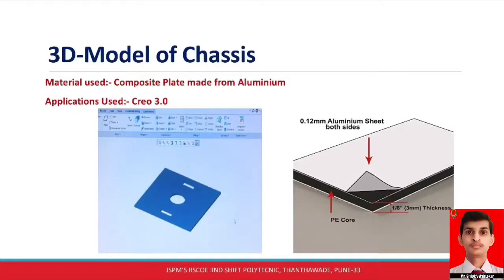In the next slide we can see a 3D model of the chassis, which was created in Creo Parametric 3.2. The figure opposite the 3D model image shows the composite sheet being used as the chassis in our project. A composite sheet is made up from a composition of two or more elements. In this case, the composition is 0.12 mm of aluminium on both sides with recycled polythene as the core material. This composite sheet is durable, able to sustain a large amount of load, with less bending under load, and is also cheaper in cost.